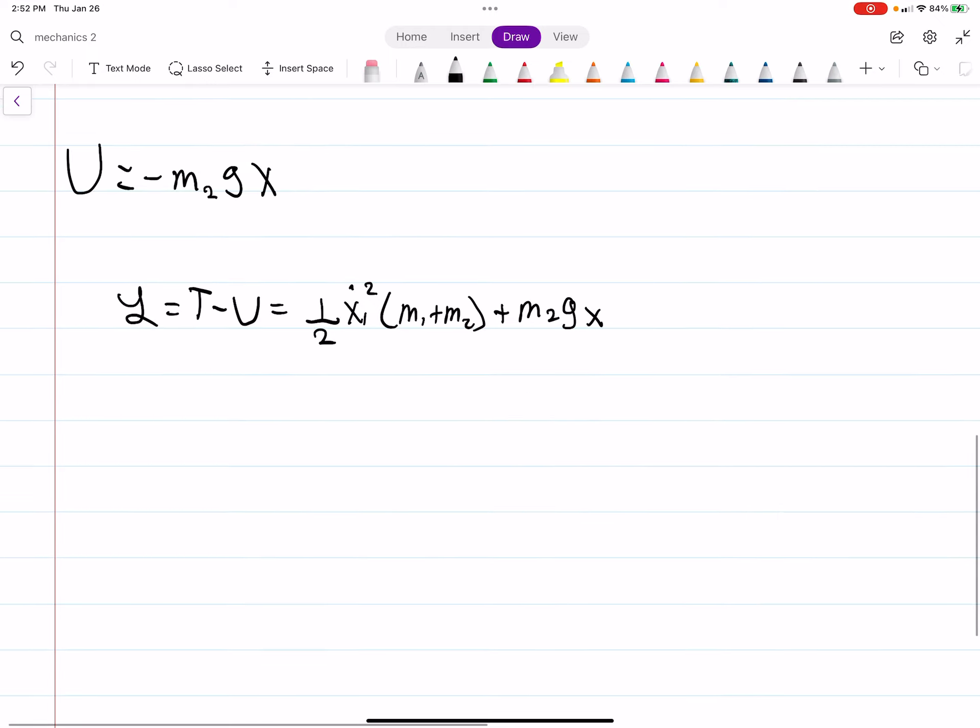And now we want to find our equation of motion. So we'll use the Euler Lagrangian. That's the partial derivative of the Lagrangian with respect to, in this case, X, our generalized coordinate, equal to the time derivative of the partial derivative of the Lagrangian with respect to our generalized velocity, which is just X dot.